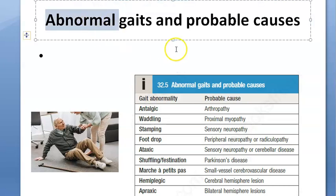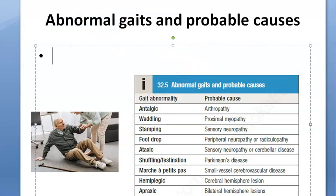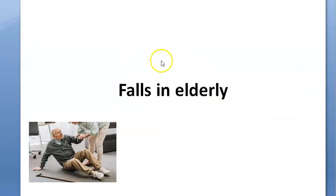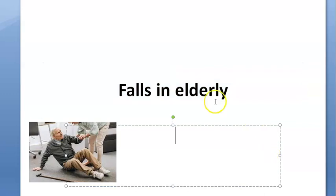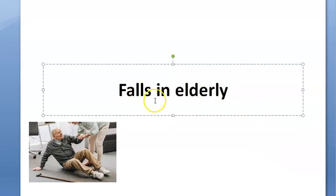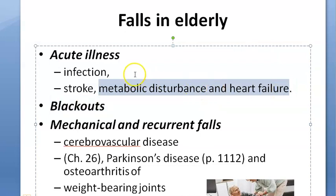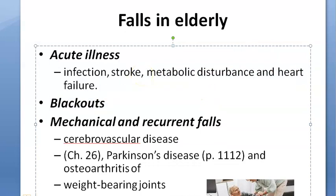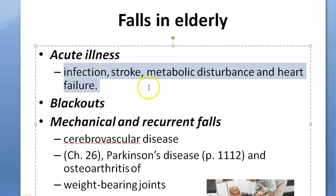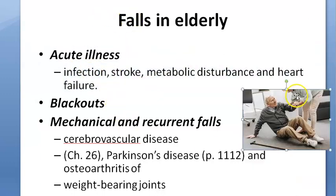In this video, let us look at falls in elderly — basically why elderly fall. It could be acute illness like infection, stroke, metabolic disturbance, or heart failure. You need to look at these because a fall could be a symptom of something which is an underlying cause.